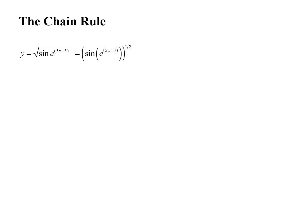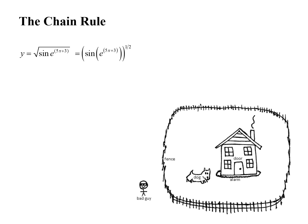We want to take the derivative of this function, and taking the derivative of a function like this is related to this picture here with a bad guy. This bad guy wants to break into the house, so he has to get over the fence, take care of the dog, defuse the alarm, and then get into the door. So the thing on the outside that the bad guy must do first is the 1 half power, which is the fence. Then he has to take care of the dog, which is the sine. Then we take care of the e, which is the alarm, and then the 5x plus 3, which is the door.